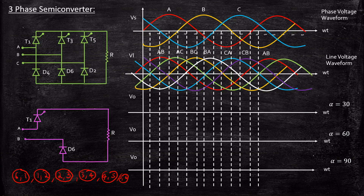Initially, devices 6 and 1 will be conducting. Phase A ensures that T1 is forward biased, and phase B ensures that D6 is forward biased. Consequently, both act as short circuits and current flows from the source to the load. In this case, Vout is nothing but Vab when devices 6 and 1 are conducting.